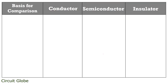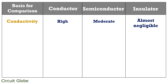We have now seen the basic definitions of conductor, semiconductor and insulator. Let's see how the three are differentiated on the basis of various factors. The first factor is conductivity — the property of a material that allows large flow of electric current through it. Conductors possess very high conductivity, semiconductors possess moderate conductivity, and the conductivity of insulators is almost negligible.